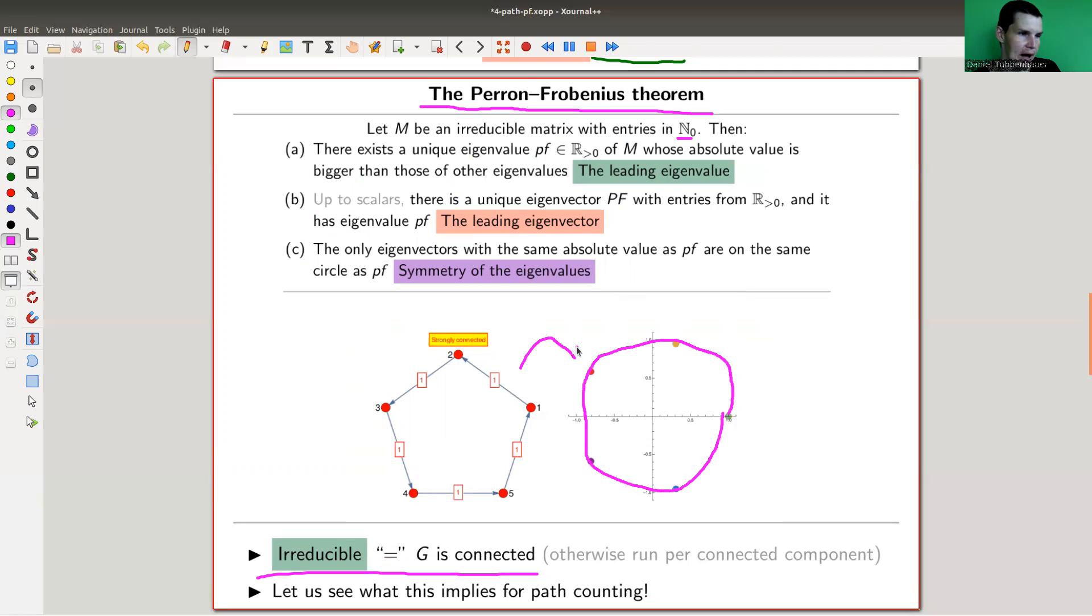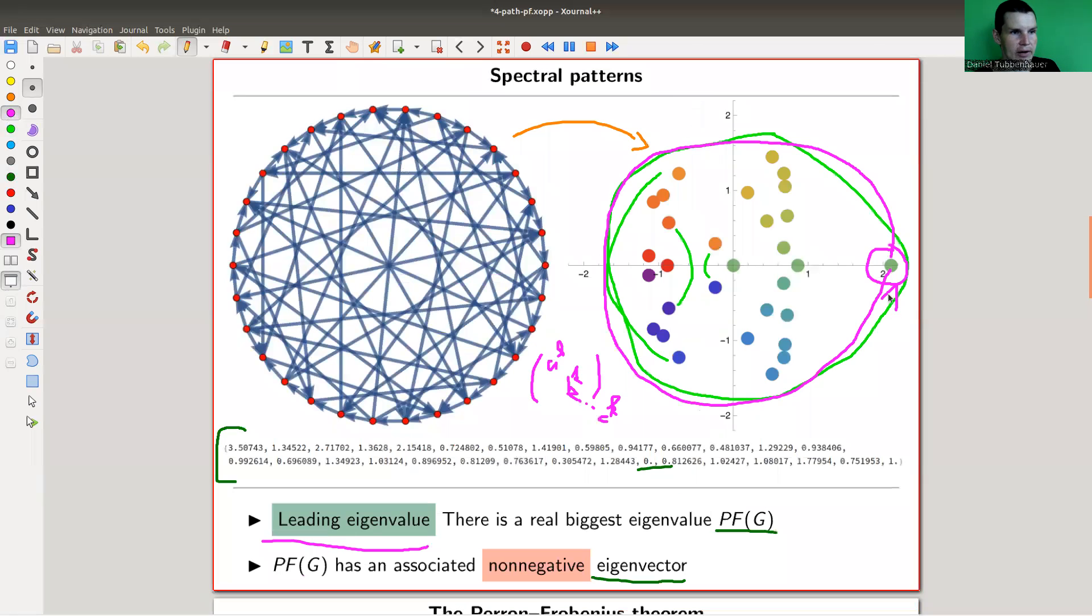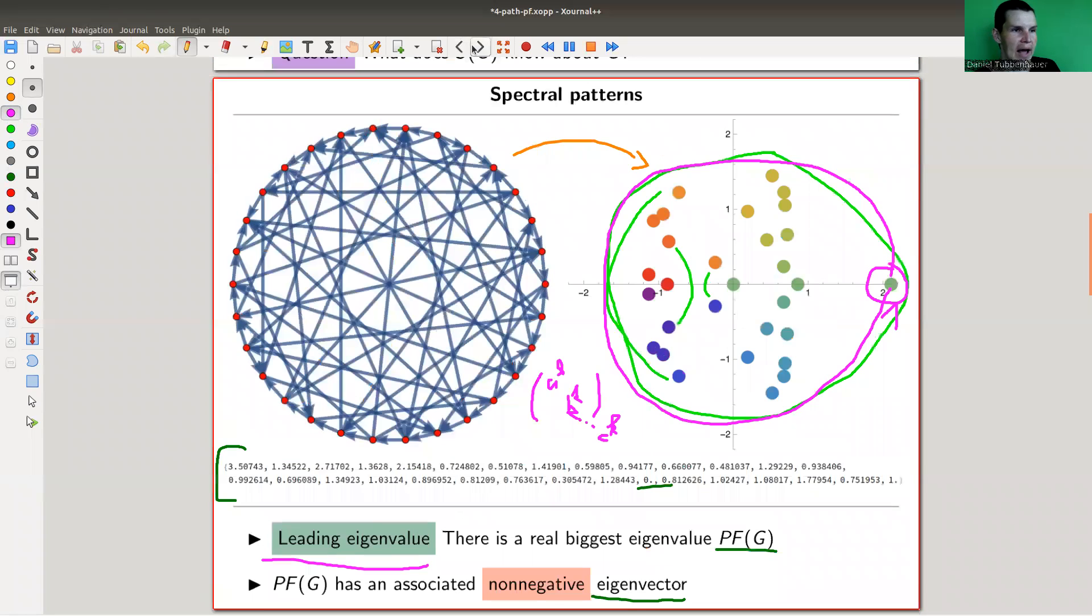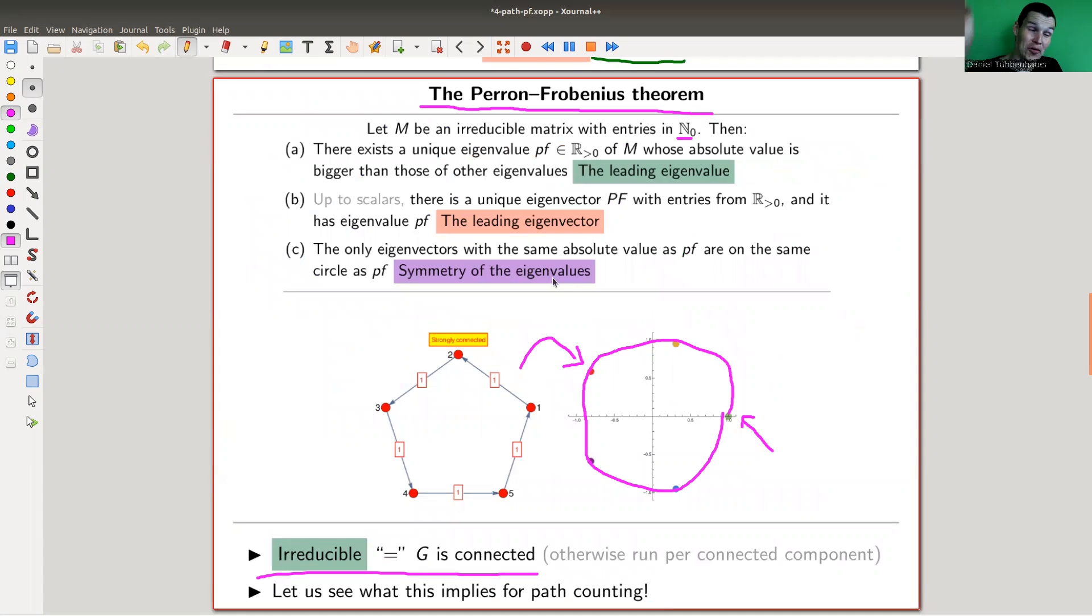And all other eigenvalues with the same absolute value are in a circle around the leading one. So here, this graph just has the fifth roots of unity as eigenvalues, and they're beautifully around the circle, and the leading one is the one to the right. And that's just always true. Here, the leading one, you draw a circle, everything else is in between, or on the circle. You draw a circle, everything else is in between, or on the circle. And the ones that are on the circle are kind of Galois conjugates and roots of the polynomial.